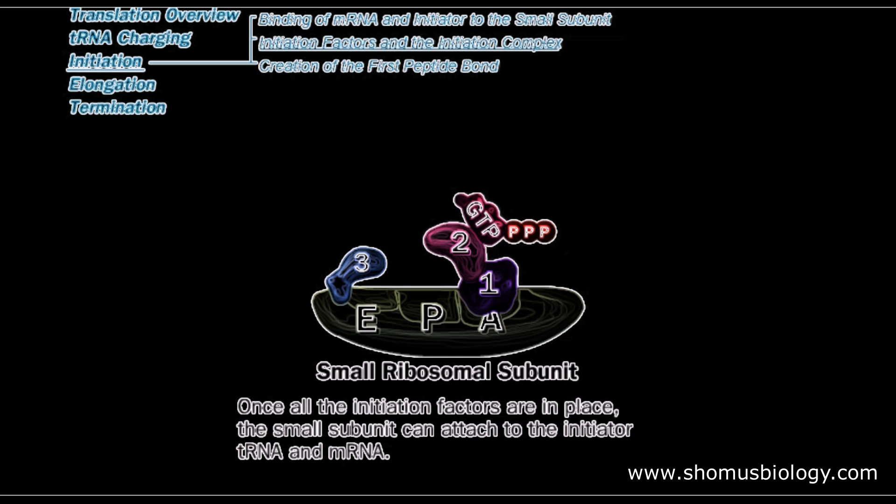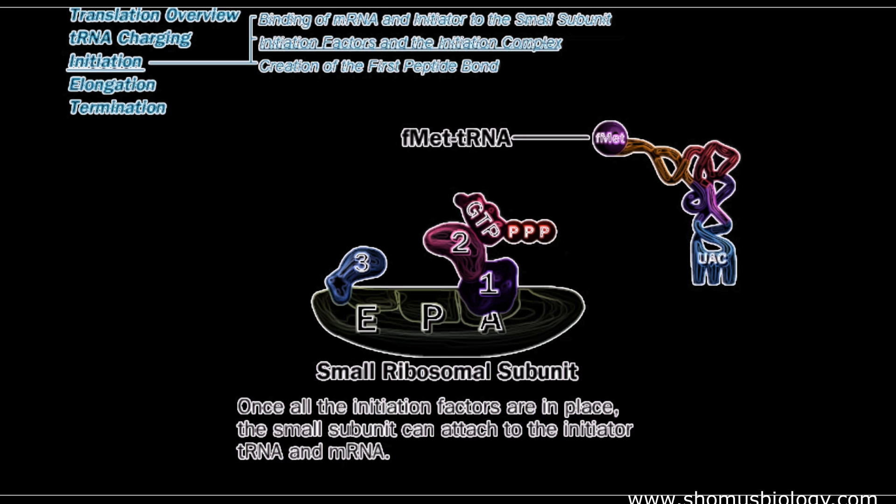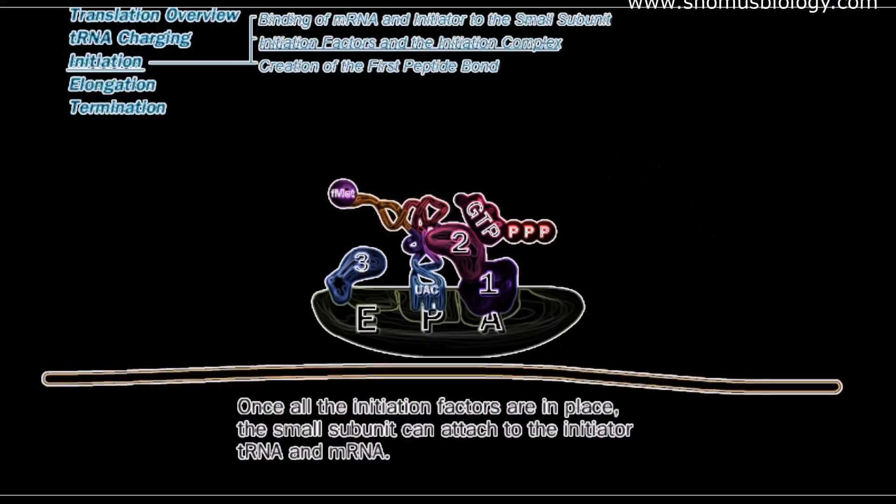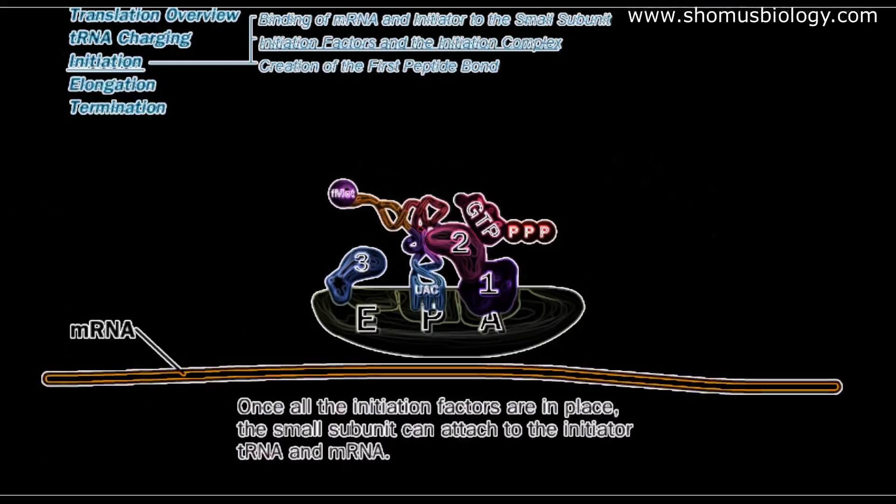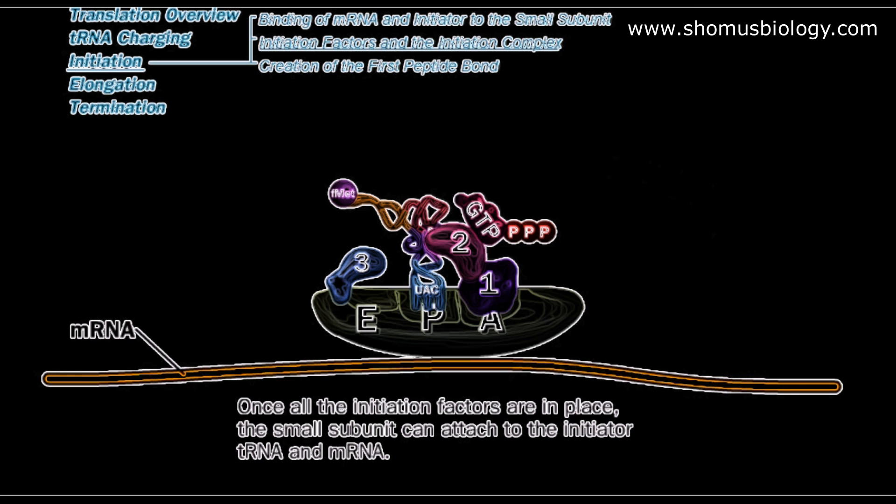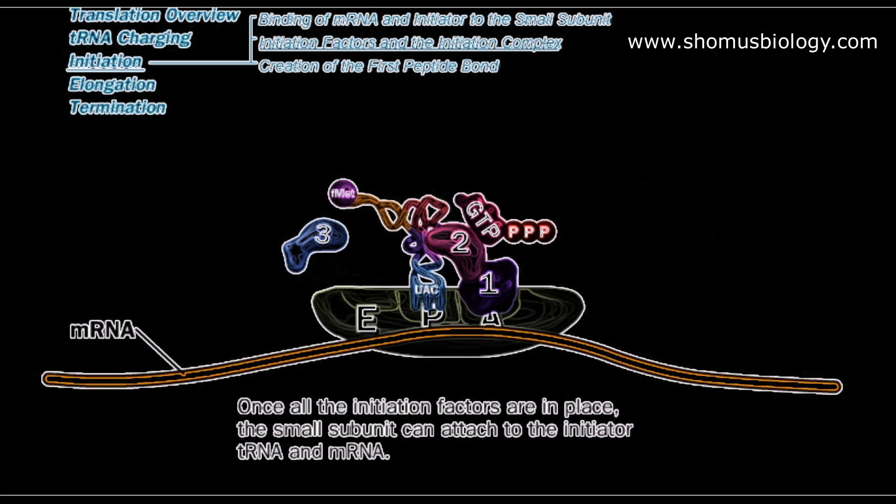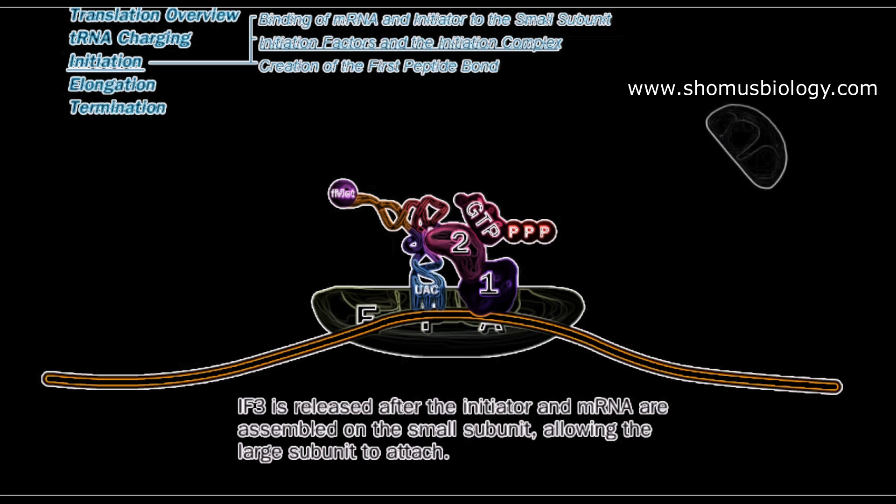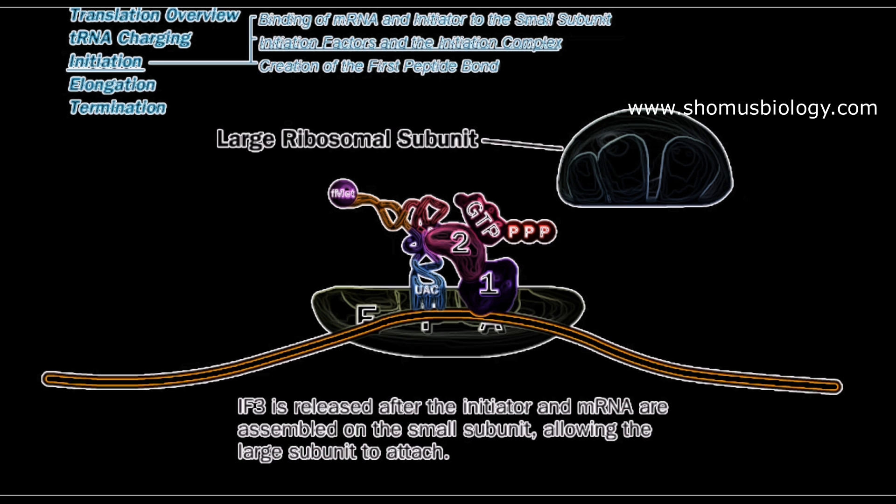Only the P site is free where a tRNA can bind at the first time, and this is the first tRNA—formylated methionine-carrying tRNA. This is not generally called an aminoacylated form. This tRNA brings itself and attaches itself to the P site. This is the very first step. Then this whole small subunit, along with all these initiation factors, binds itself to the mRNA. Once the attachment is done, then IF3 releases.